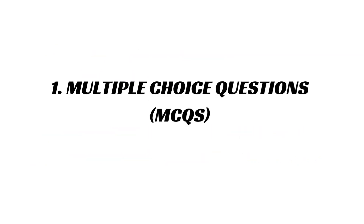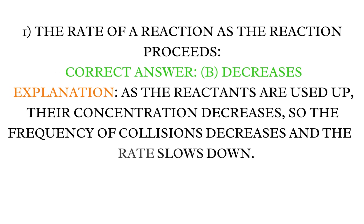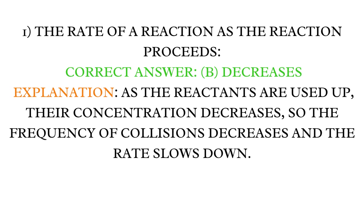Multiple Choice Questions. MCQ 1: The rate of a reaction as the reaction proceeds. Correct answer: B — Decreases. Explanation: As the reactants are used up, their concentration decreases, so the frequency of collisions decreases and the rate slows down.